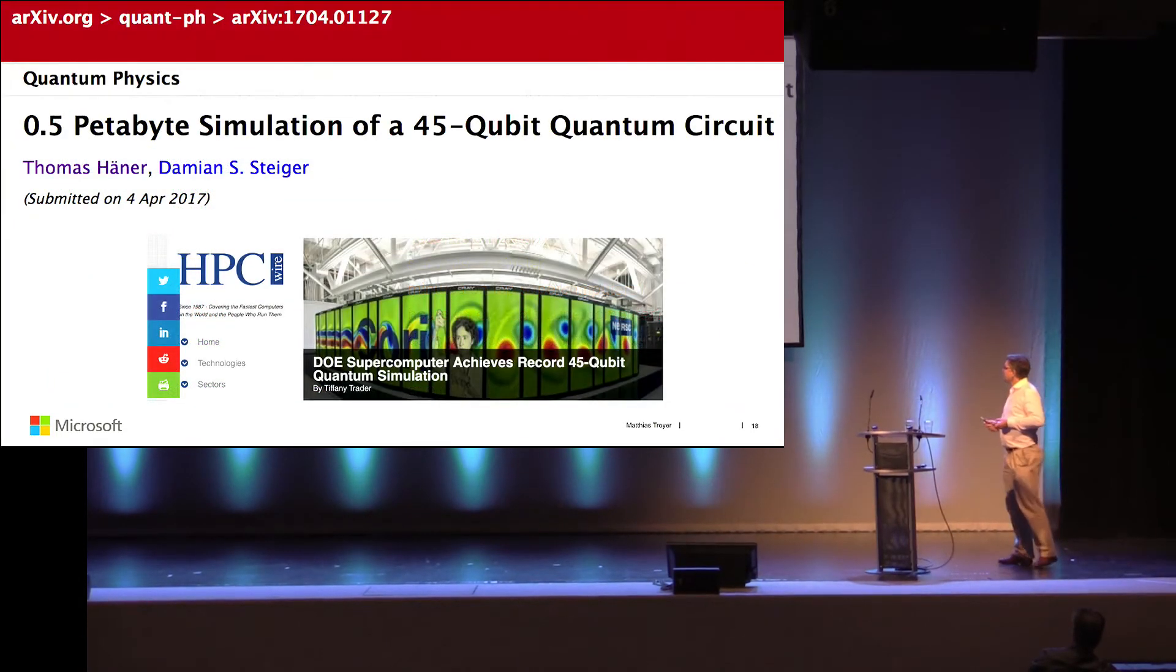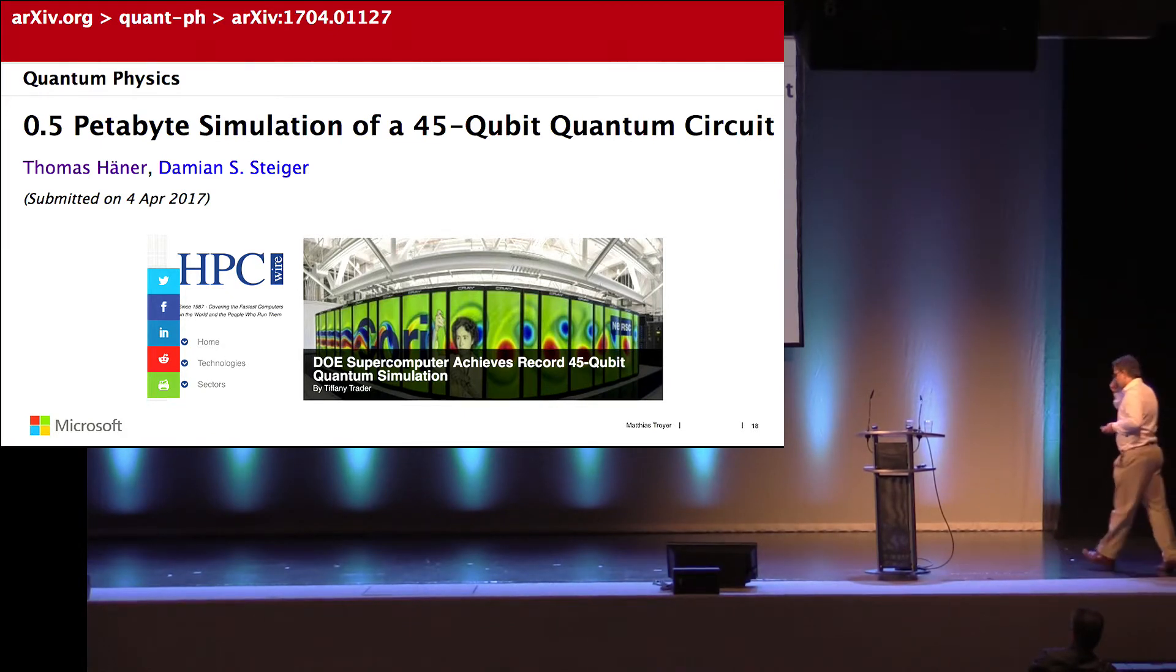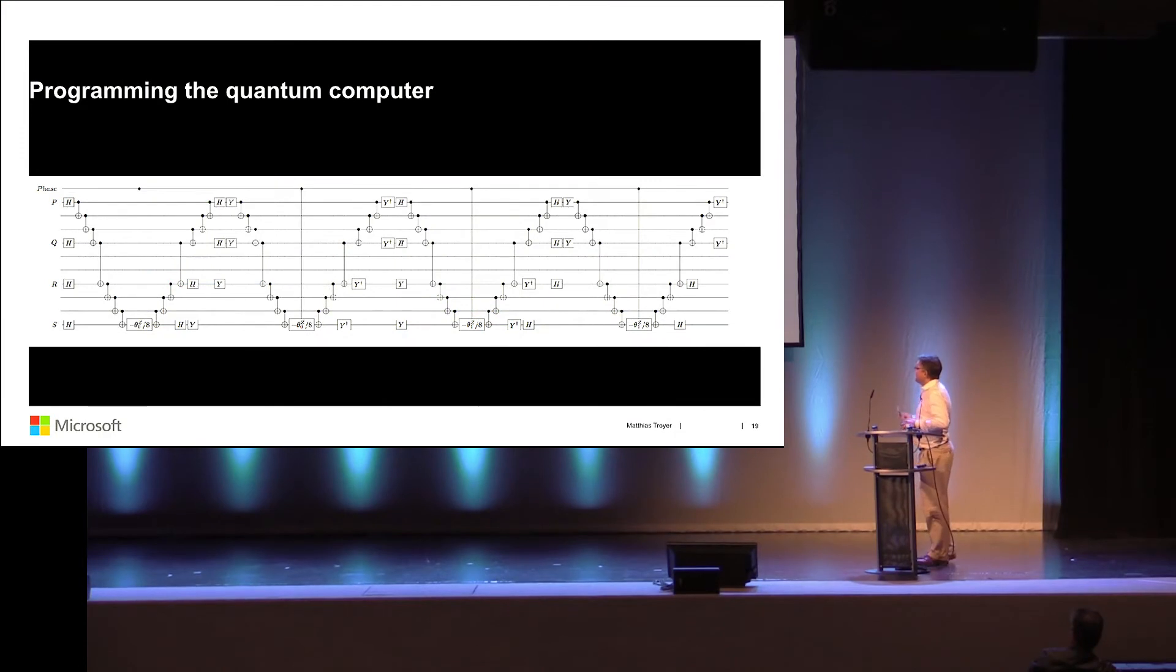Where do we stand now? My students managed to simulate 45 qubits because they got half a petabyte on the Cori 2 machine, and that's the world record. Google is now trying to build a 49 qubit machine because that cannot be simulated classically. But my students already said if they use the file system of Cori 2 as swap space, then they can do it. So that's the competition at the moment.